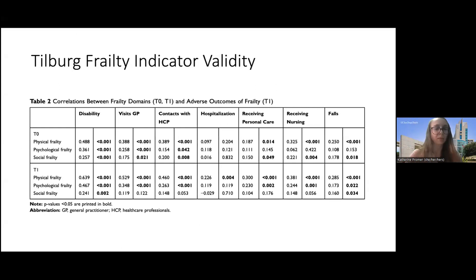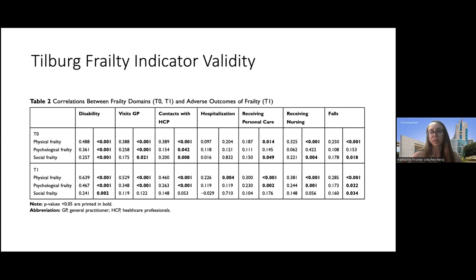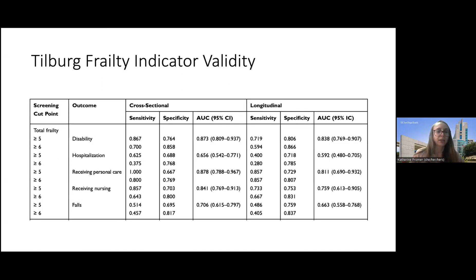There is good data about the validity of this indicator in the general population — it's a good predictor of disability and healthcare utilization, including visiting a general practitioner, being hospitalized, utilizing personal care or nursing, and outcomes such as falls. The cutoff of five seems appropriate for balancing sensitivity and specificity.